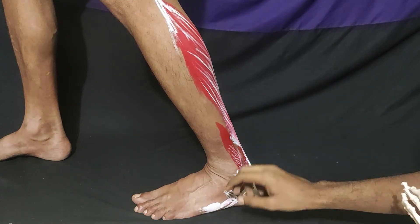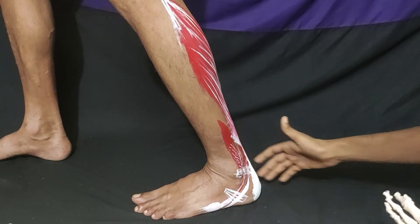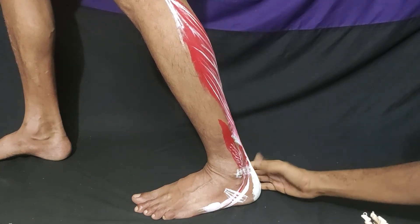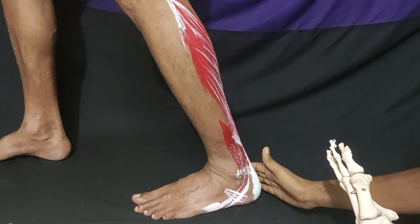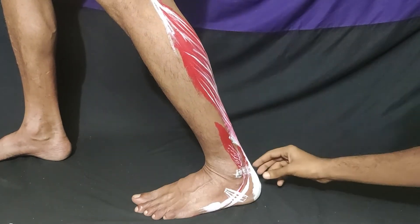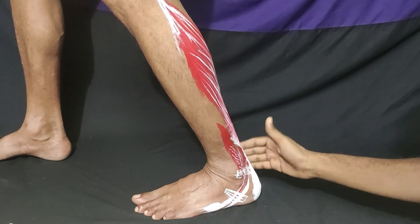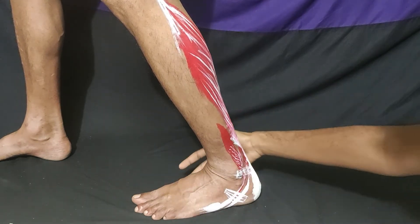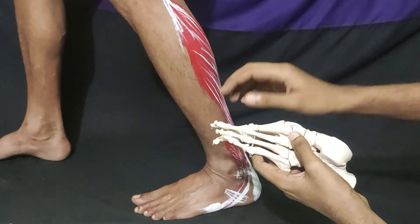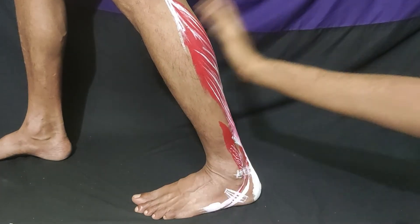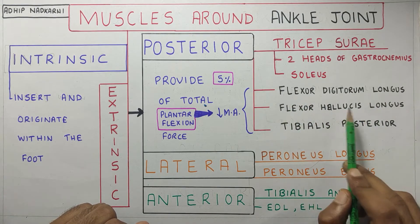A tight gastrocnemius prevents dorsiflexion and the supination of the foot, putting a lot of stress on your plantar fascia. The plantar fascia causes the foot to supinate, making it a rigid lever so the body can push off. When gastrocnemius prevents this, the unsupinated — or pronated — foot loads the plantar fascia, causing midfoot and forefoot pain commonly seen in people with gastrocnemius tightness.